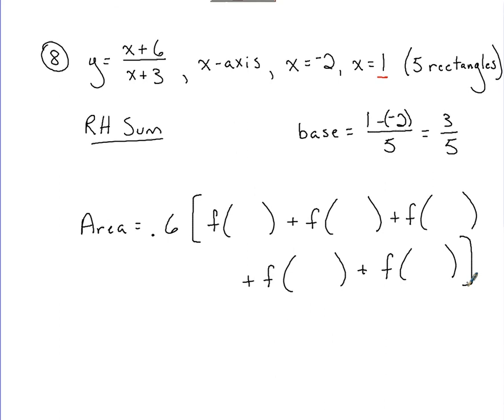Now how I find the values that I'm plugging in for the functions is I start up here at the right end of my interval, which would be at 1. So I plug that in to the function. I then subtract away the base length of 0.6. In this case I get 0.4. That's the next value I'm going to plug in for the second function notation. I subtract 0.6 away again, so 0.4 minus 0.6 gives me negative 0.2. That gets plugged into the third slot. Subtract 0.6 again, get negative 0.8. We plug that into the fourth function notation. Subtract 0.6 one more time, we get negative 1.4.